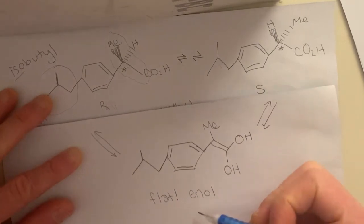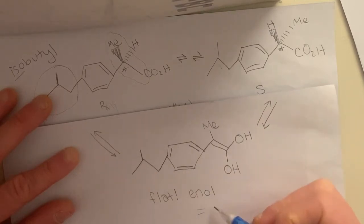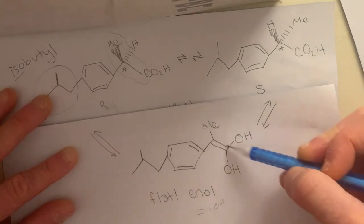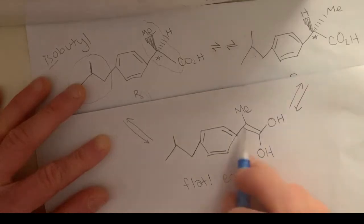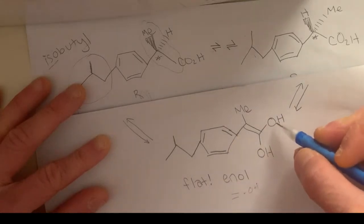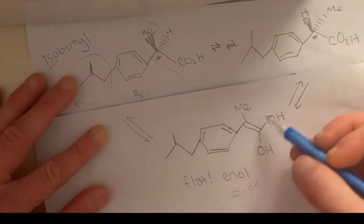So en, so en is what we call when we have like a carbon-carbon double bond. So that's where the en comes from. And then ol is for alcohol. So that's where the OH. So you can see we have this en, this alkene group. And then the hydroxyls, the alcohol groups. And so this is what we call an enol.